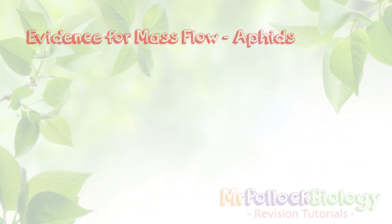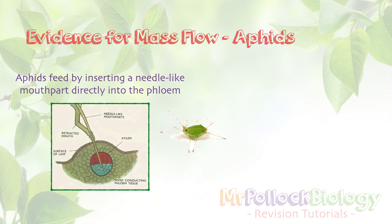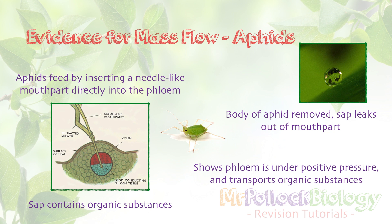The second experiment involves aphids. Some aphids feed by inserting their stylet — their hollow mouthpart — directly into the phloem, with sap forced into their digestive tract. We allow the aphids to drill their stylet into the phloem, then remove their bodies, leaving the hollow stylet in place. We see sap leaking out of the mouthpart, and when we test that sap it contains organic substances like sucrose. This shows two things: the phloem must be under positive pressure, and the phloem transports organic substances.